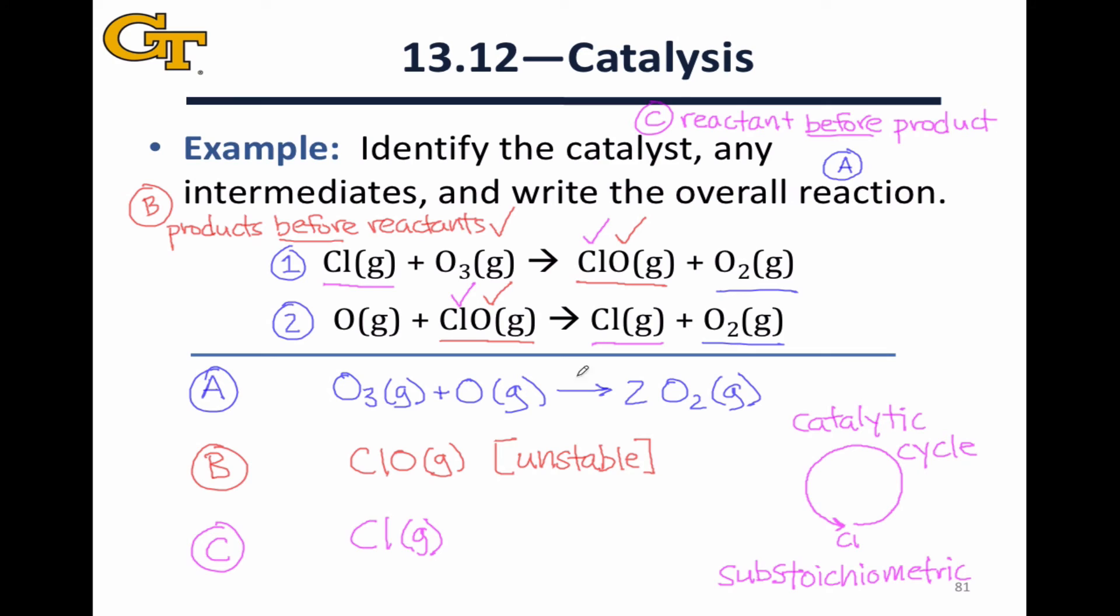We can use what's called a substoichiometric amount. This is just a fancy term for not enough to stoichiometrically consume all of the reactants, to make the reaction go to completion without having to worry about the rate slowing down later on, because the catalyst is never consumed.